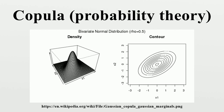The lower bound is point-wise sharp, in the sense that for fixed U there is a copula such that W is attained. However, W is a copula only in two dimensions, in which case it corresponds to counter-monotonic random variables. In two dimensions, i.e., the bivariate case, the Fréchet–Hoeffding theorem fully characterizes the families of copulas.